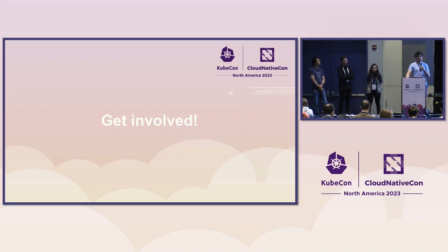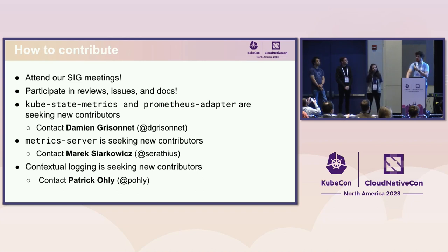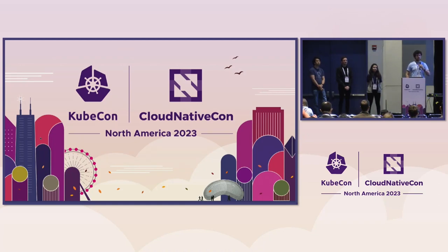We're an open SIG and we're all friendly. We love new contributors or people who have experience trying to use any of the features we've talked about today. The best way to get involved is to attend our SIG meetings or message us on Slack. We definitely need help with reviews or debugging issues. Some of our sub-projects could really use contributors — if you're interested in kube-state-metrics or Prometheus adapter, contact Damien; for metric server, contact Merrick; and for contextual logging or any logging efforts, Patrick is a great contact.